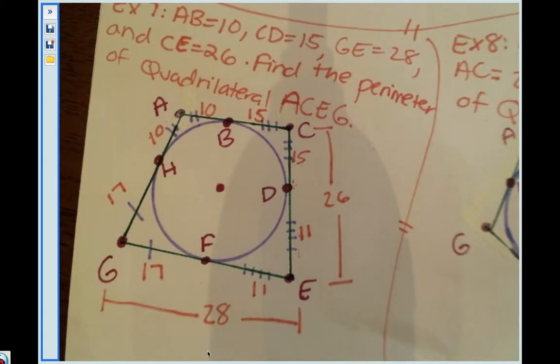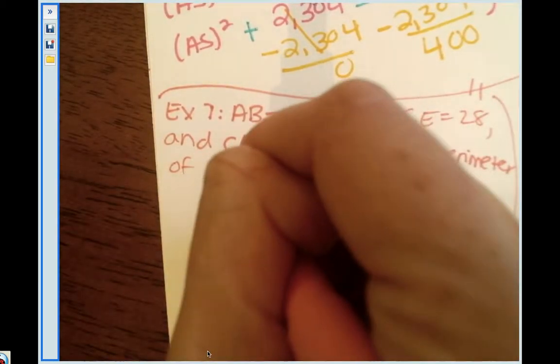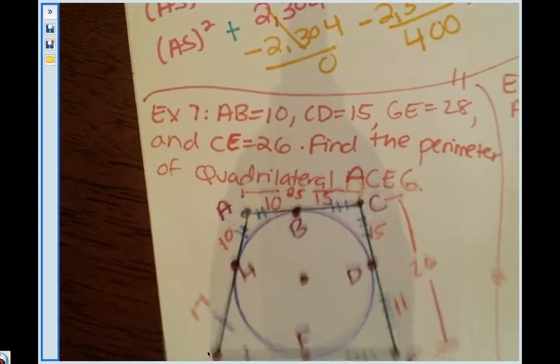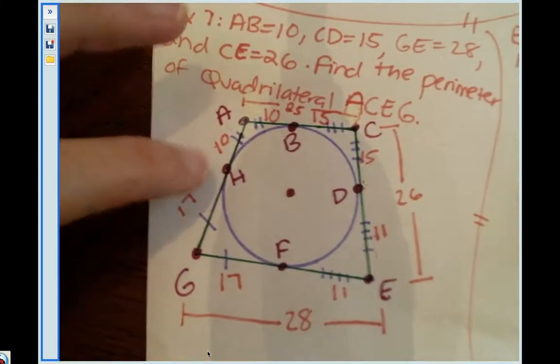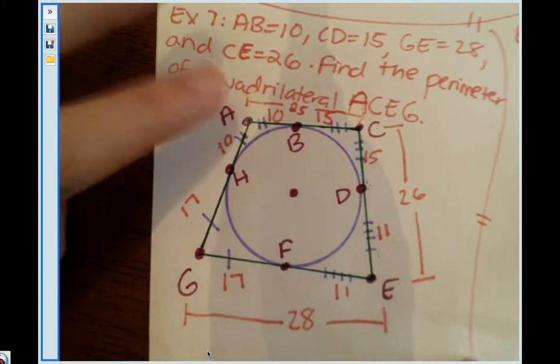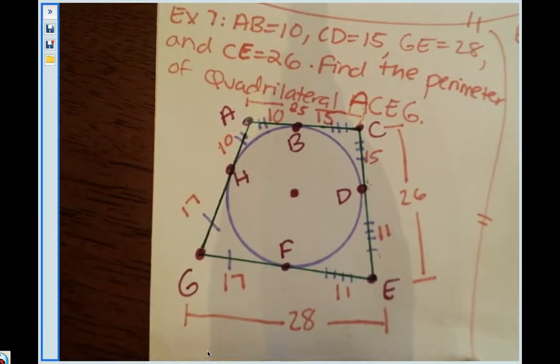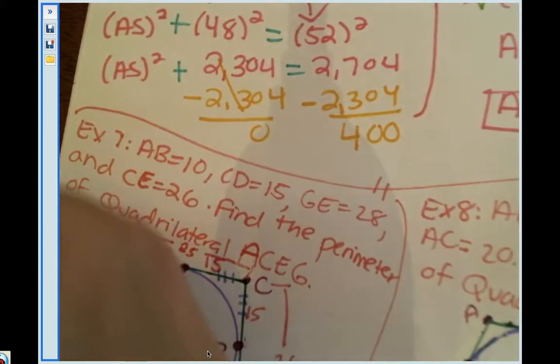All right, so we have all the pieces, we just need to add up all the sides of this quadrilateral. So we know this is 28, we know that's 26. This whole side, if we add up 10 and 15, will give me 25. And then this side, this is 10 and that's 17, AH is 10 and HG is 17, so AG if I add those bad boys together will give me a 27.